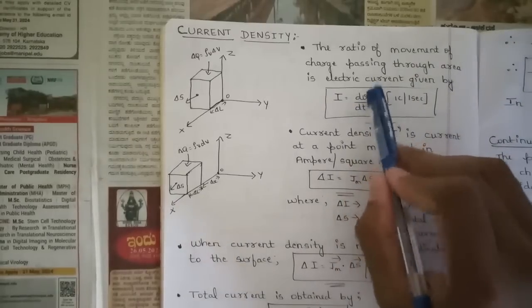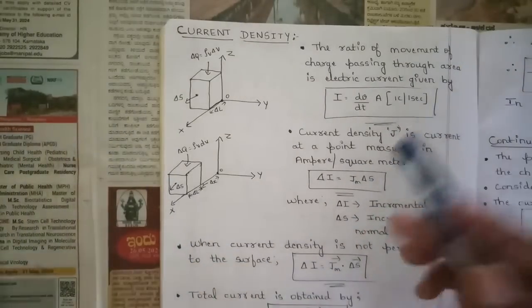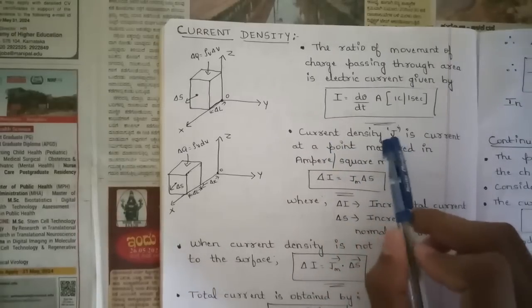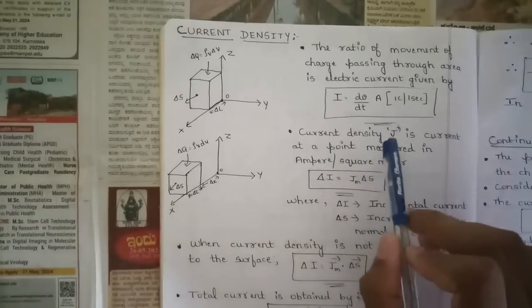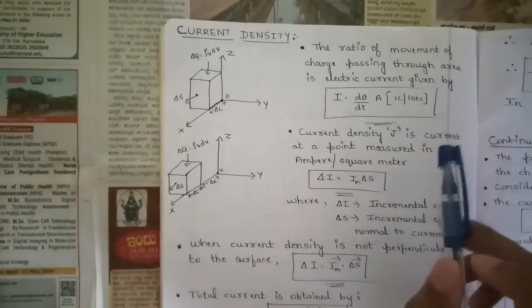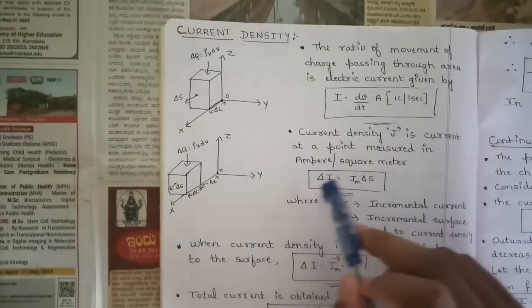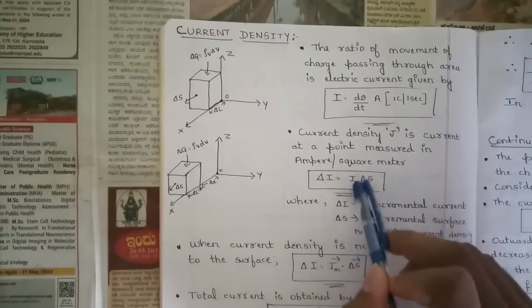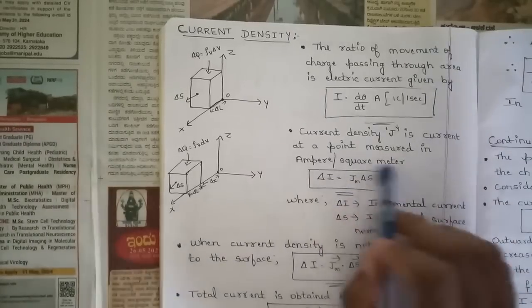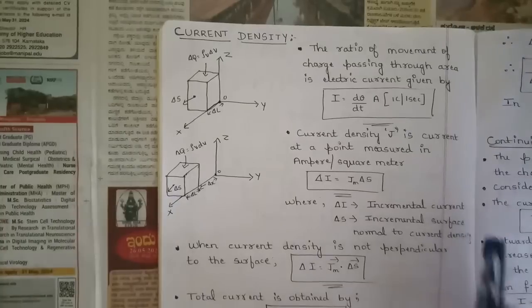Electric current is given as I = dQ/dt in amperes — that is one coulomb per one second, as you all know. Now current density J: this symbol J represents current density, which is current at a point measured in amperes per square meter. That is, Delta I = J_n · Delta S, where Delta I is the incremental current and Delta S is the incremental surface.